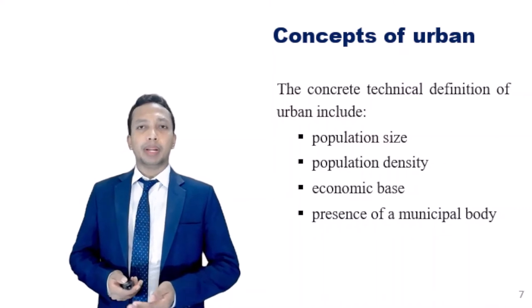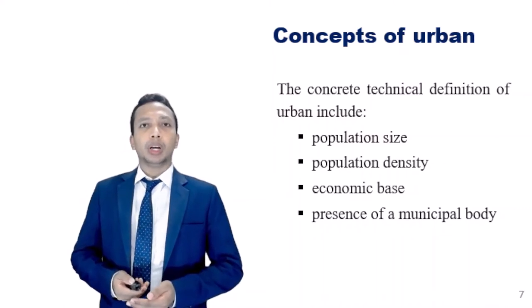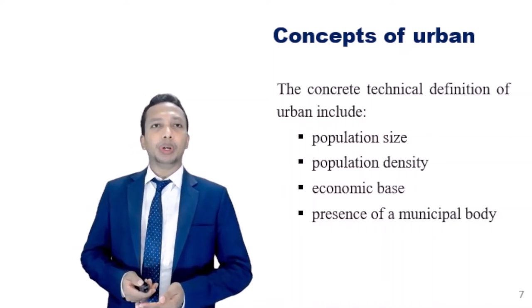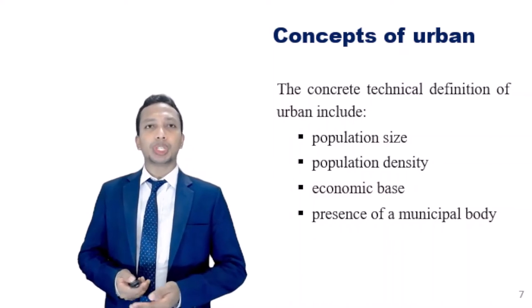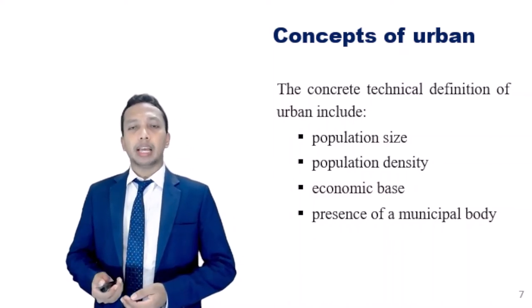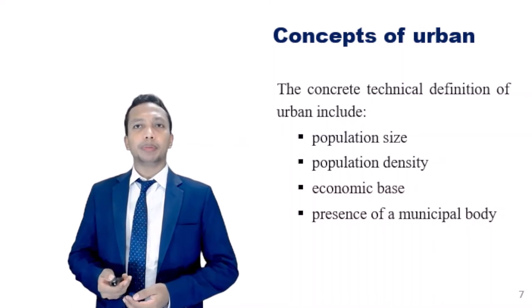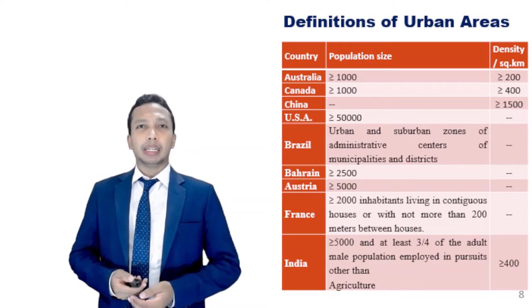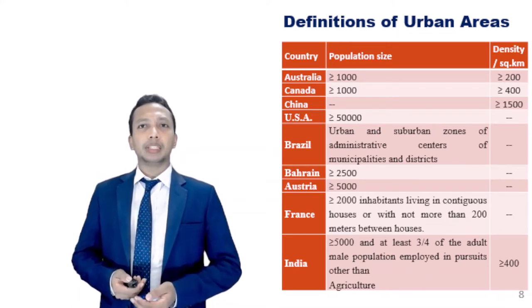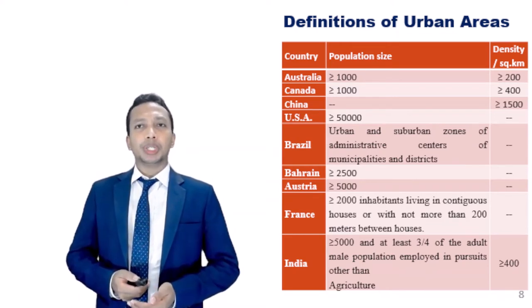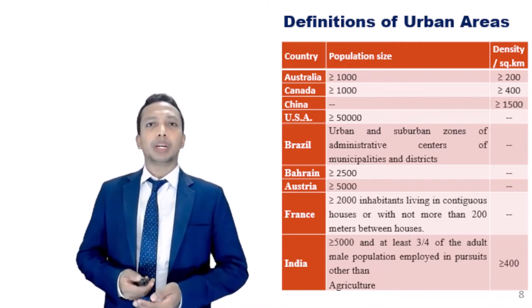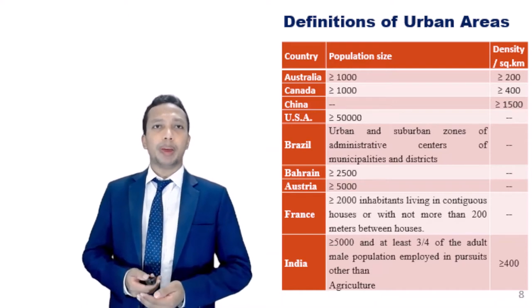The simplest definition of an urban population is that of a population residing in towns and cities. But the concrete technical definition of urban includes population size, density, economic base, buildings, and presence of a municipal body. Though there is no usual minimum number that can be put against these aspects, no numbers are universally applicable all over the world — all countries have their own specification for each of these aspects.